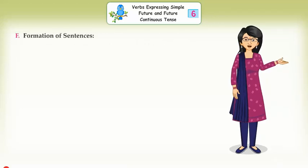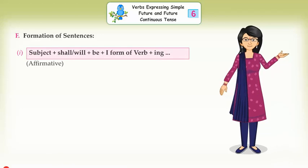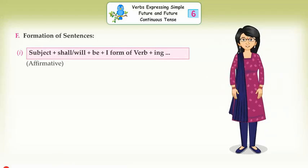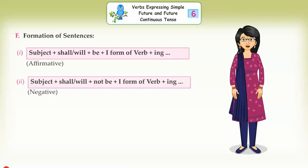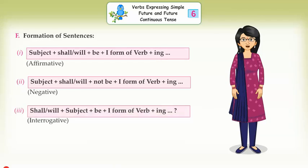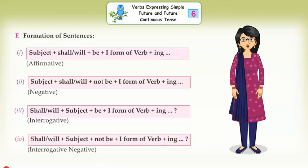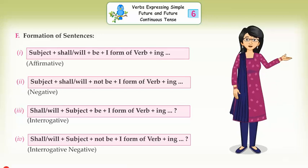Formation of Sentences for Future Continuous Tense. 1. Subject + shall/will + be + first form of verb + -ing (Affirmative). 2. Subject + shall/will + not be + first form of verb + -ing (Negative). 3. Shall/will + subject + be + first form of verb + -ing (Interrogative). 4. Shall/will + subject + not be + first form of verb + -ing (Interrogative Negative).